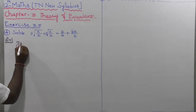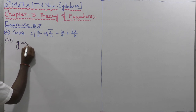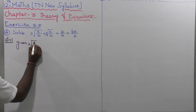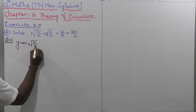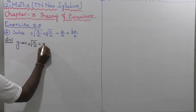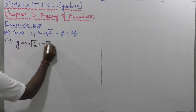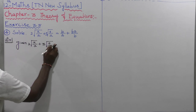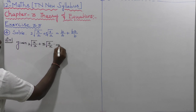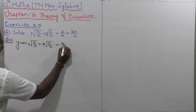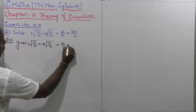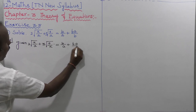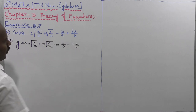The given equation: 2 into root of X by A plus 3 into root of A by X is equal to B by A plus 6A by B.